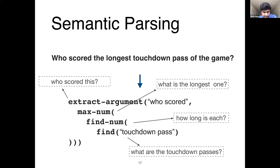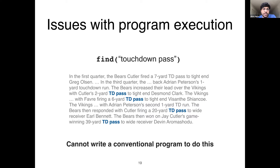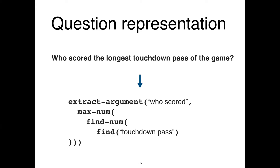The crucial part is how we execute this program against the paragraph. For example, we need to execute a find function with the argument 'touchdown pass' and reliably output all the spans in the text which are touchdown passes. We cannot write a conventional program to do this reliably, so the idea in neural module networks is to learn these functions. These functions are predefined — we pre-define a set of generic functions that can work on a large set of questions.